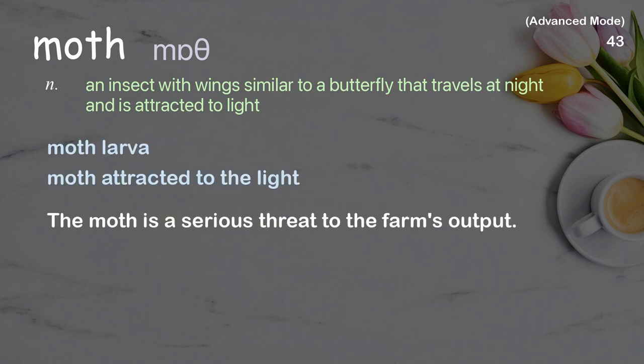Examples: moth larvae, moth attracted to the light. The moth is a serious threat to the farm's output.